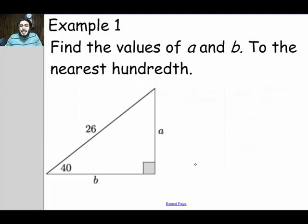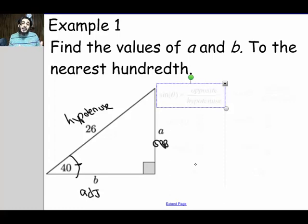Here's our first example. Find the values of A and B to the nearest hundredth. So we got this 40 degree angle. We're given that. And we are given the hypotenuse. If we use the 40 degree angle as our reference angle, that makes side A the opposite side and side B the adjacent side. So if I want to start by finding side A, I will have to use the sine formula because the sine formula relates the opposite and the hypotenuse.